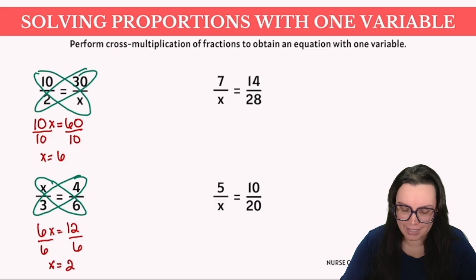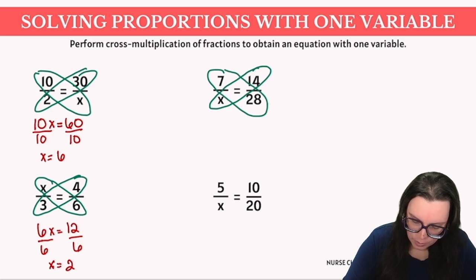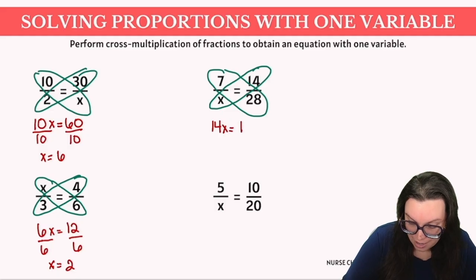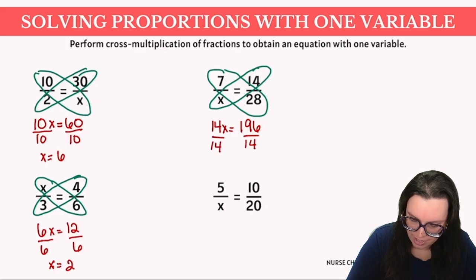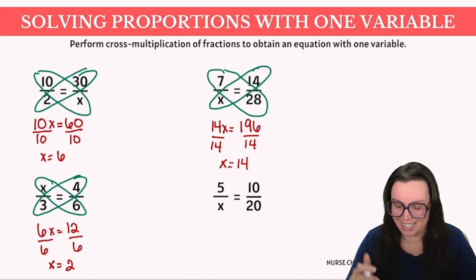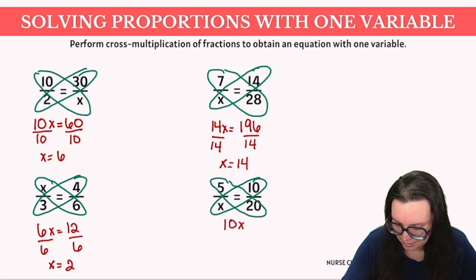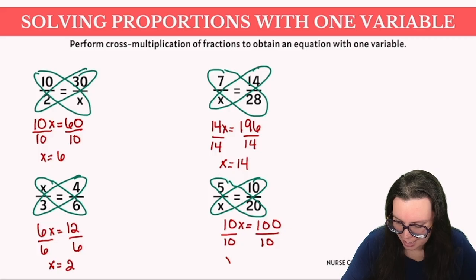For our next example, we have 7 over x equals 14 over 28. We cross multiply our proportions, giving us 14x equals 196. We isolate x by dividing each side by 14, giving us x equals 14. For our final example, we have 5 over x equals 10 over 20. We divide each side by 10 to isolate x, giving us x equals 10.